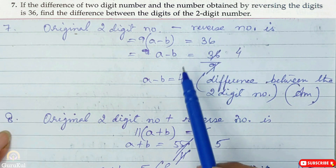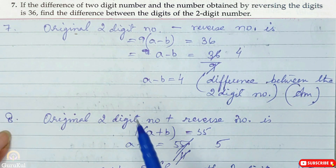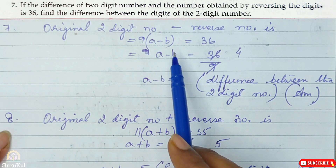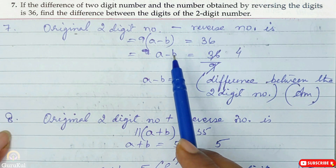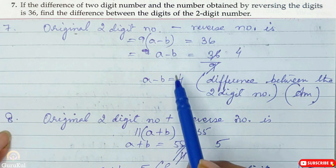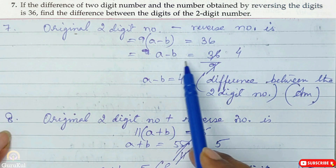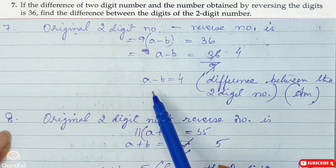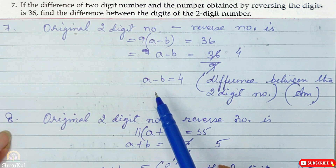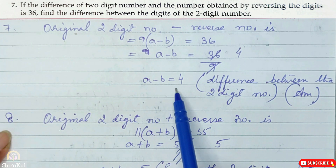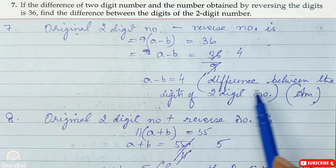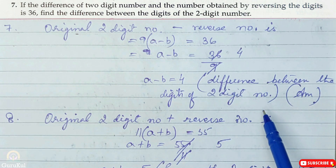If you have watched part 1 covering questions 1 to 5, you will understand how we got 9(A minus B) — it is explained there in detail. Evaluating: A minus B is equal to 36 divided by 9, which gives us 4. The question asked us to find the difference between the digits of the two-digit number, so A minus B = 4 is our answer.